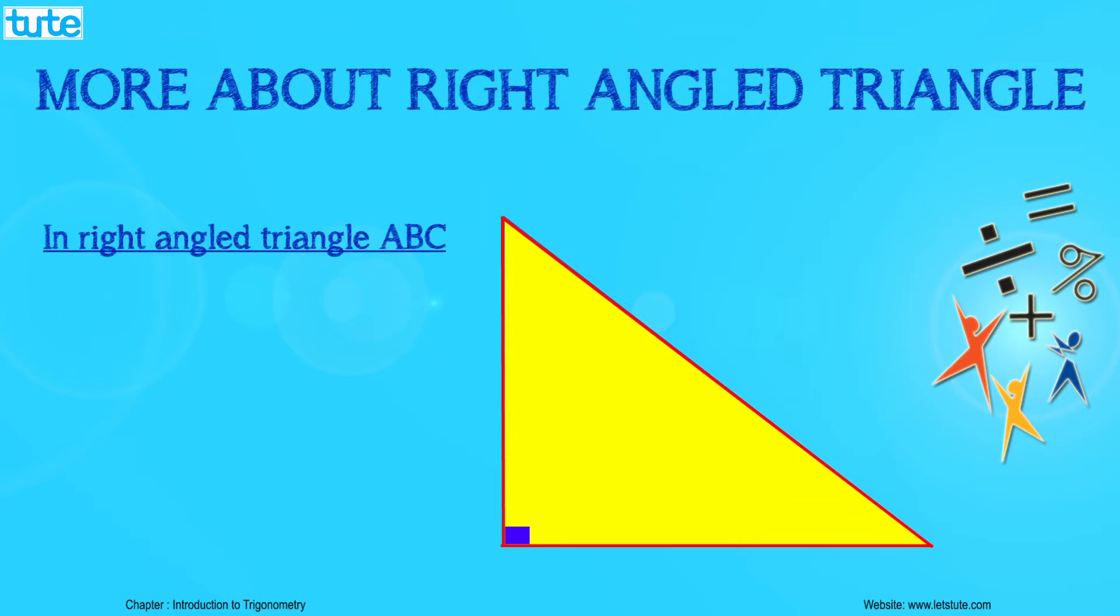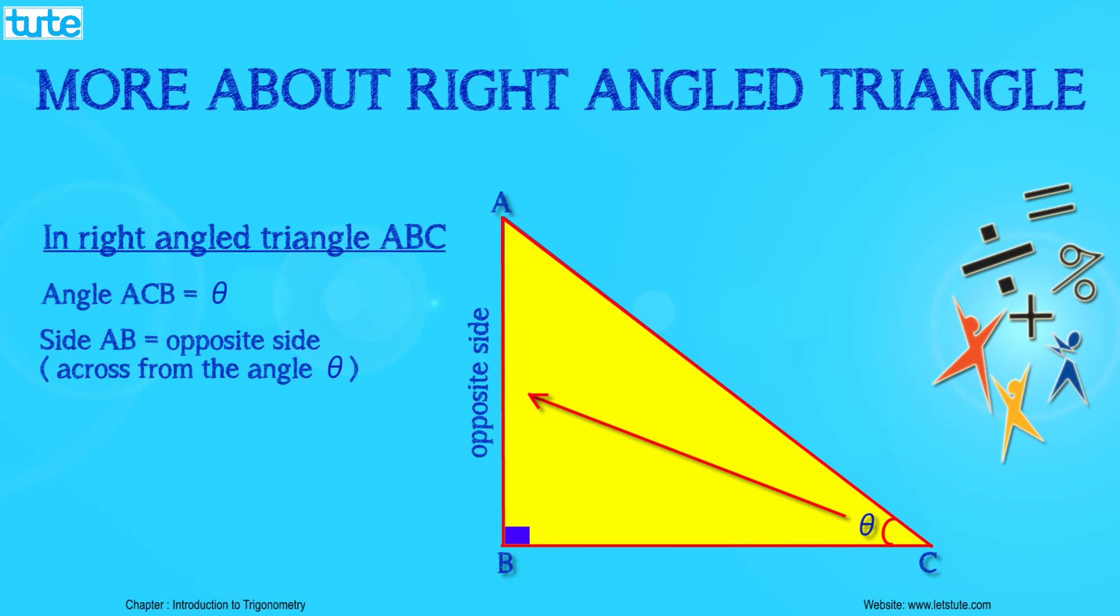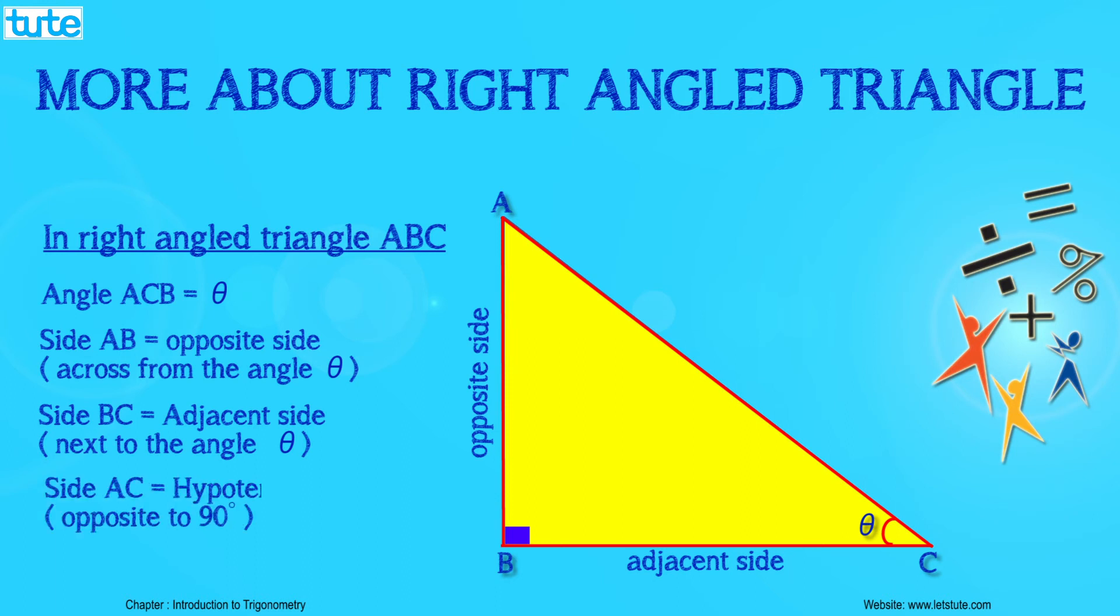Let us take a right-angled triangle ABC. Consider angle ACB as theta. Let us name the sides of this triangle with respect to theta. Now side AB is known as the opposite side, and side BC is known as the adjacent side. Side AC is the hypotenuse as it is opposite to 90 degrees.